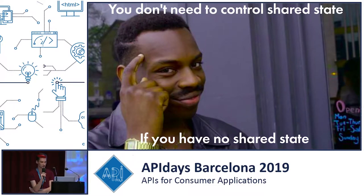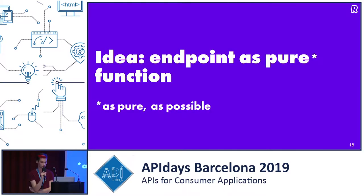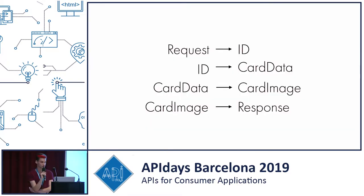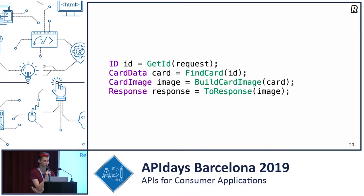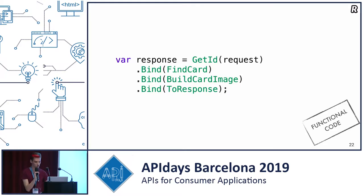The problem is that it's a bit hard to create, because it's hard to write code that changes nothing external. Reading from a database is a side effect too, because you're dependent on external state. Now let me give you some small ideas on how to make your code more functional. The first idea is pretty simple: what if your endpoint is a pure function? It's the logic of some endpoint — you transform a request to a response, transforming a card identifier to a card image. What if it's completely pure? You can express it in C# as a pipeline, which makes it more functional.